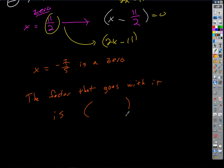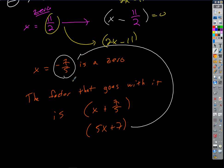It's x plus 7 fifths, not minus, right? Because that's what we'd set equal to zero to get that answer. And then when we clear the fractions, we multiply both sides by 5, we get 5x plus 7. That's the simplest factor that has that as a zero. If I set it equal to zero.